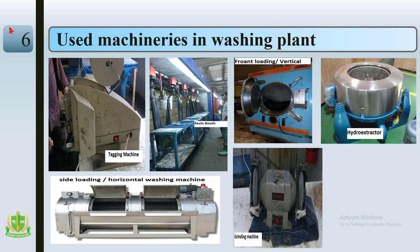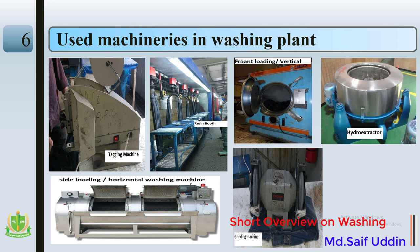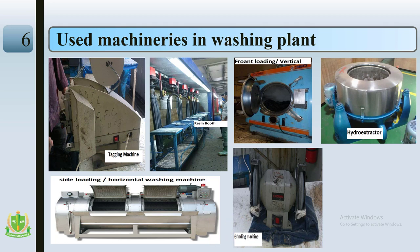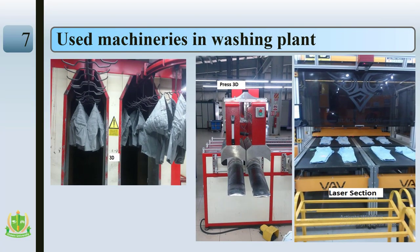Used machineries in the washing plant include: hydro extractor, which extracts extra water from garments; front-loading or vertical washing machine; resin booth, from where we spray resin; tagging machine for tagging garments; grinding machine for creating grinding effects; horizontal machine for washing garments; laser section; and press 3D, by which we can easily create 3D effects on garments.